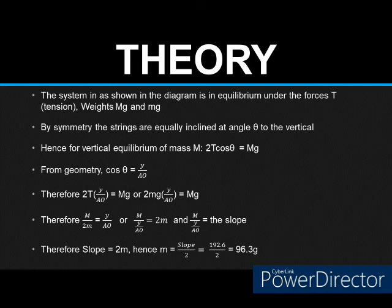Now the theory behind this experiment is that the system, as you can see from the drawing, is in equilibrium under three different forces: one, a tension force as a result of the string; the load or the weight, the weight Mg, that is from the known mass; and the weight small letter mg as a result of the unknown mass.